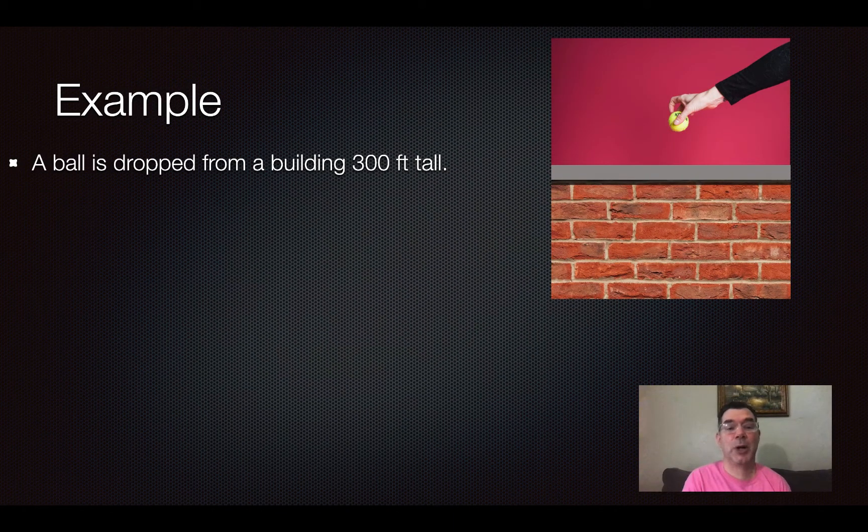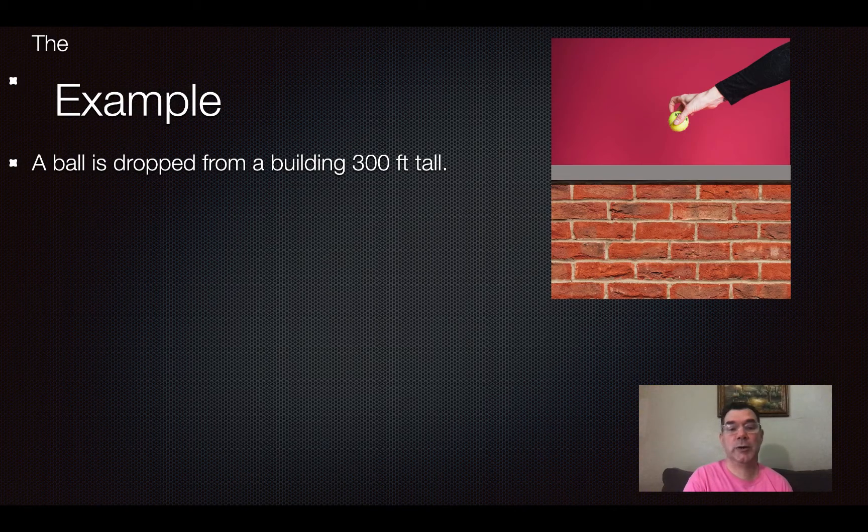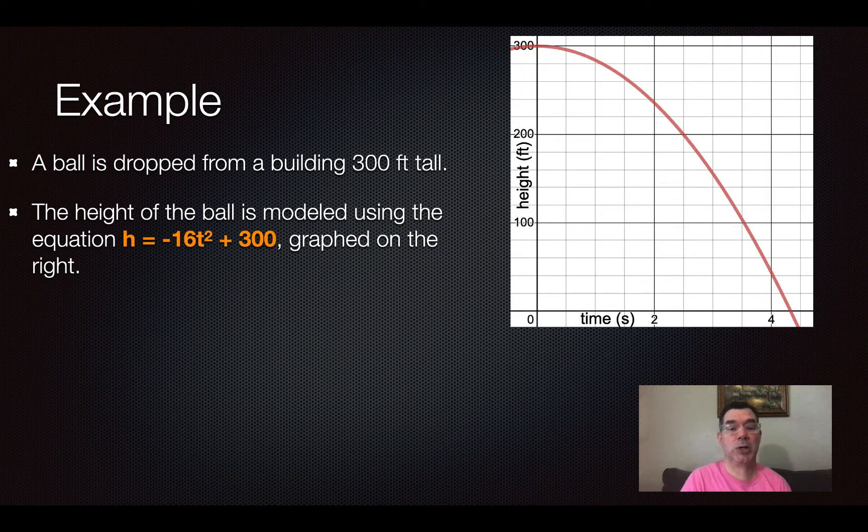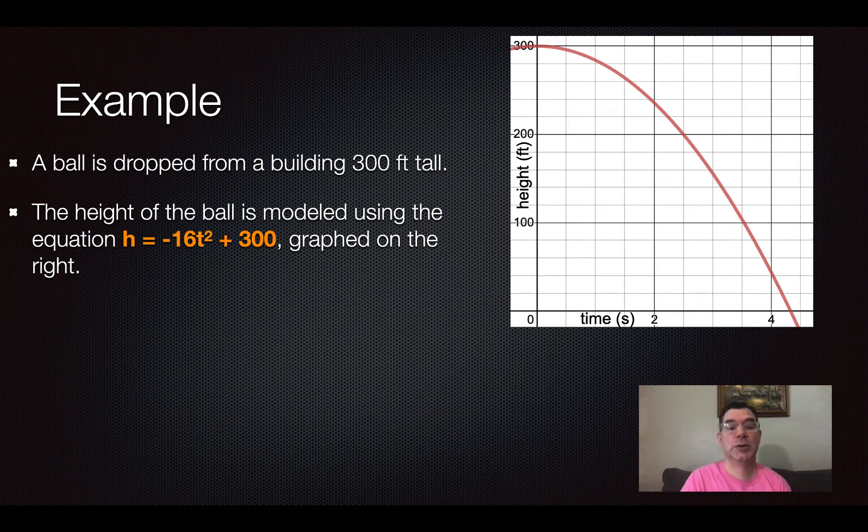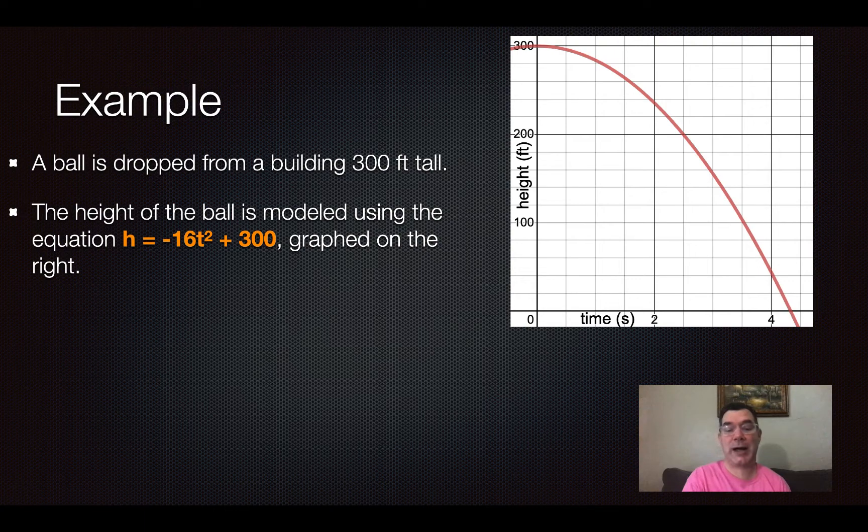So for example, if a ball is dropped from a building that is 300 feet tall, the height of the ball is modeled using this equation: h = -16t² + 300, and it's graphed over here on the right.